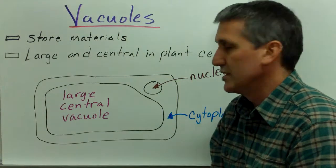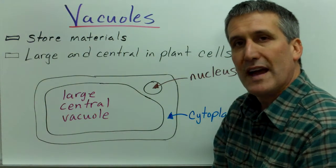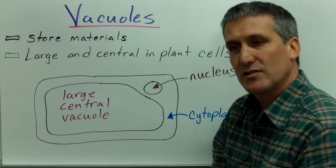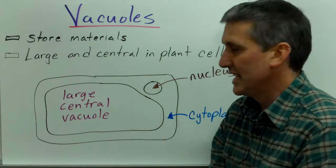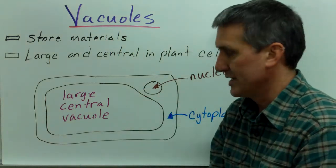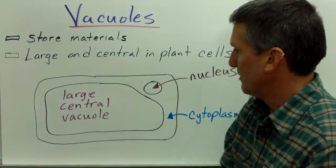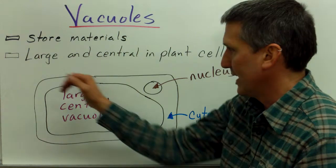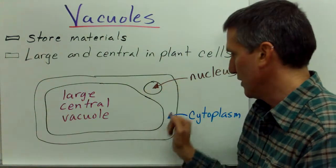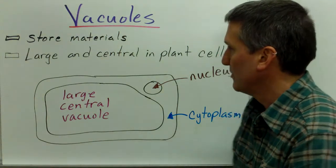Next are vacuoles themselves. Animal cells can have some small vacuoles, but mostly vacuoles are associated with plant cells, where they have a large central vacuole filled with water, which helps to keep turgor pressure and support the cell and keep it from wilting. I've drawn a plant cell here — this rectangular cell — and you can see the nucleus in the corner and the cytoplasm all around this very large central vacuole.